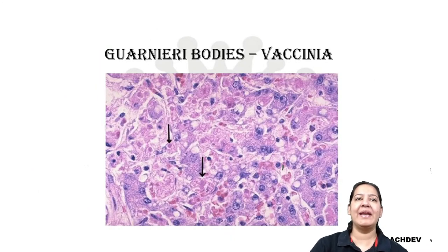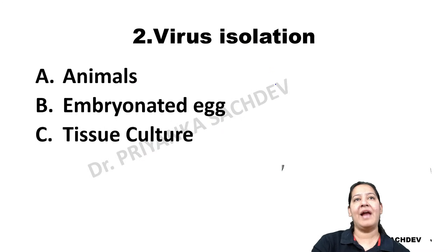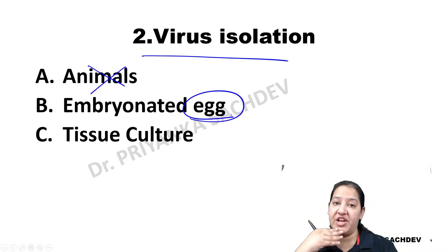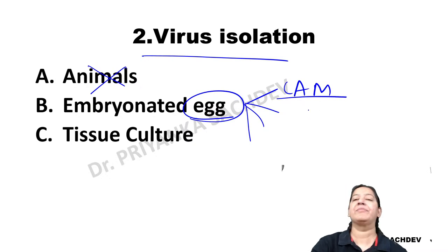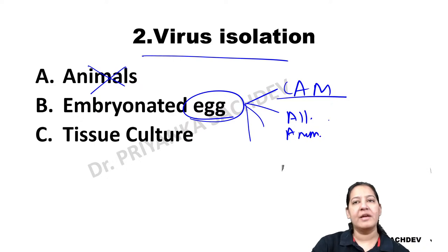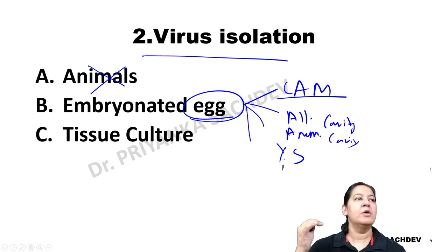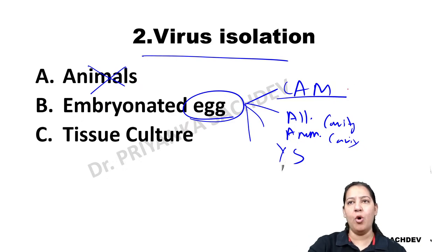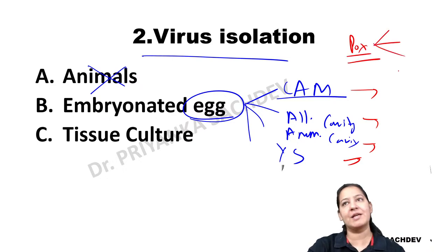For lab diagnosis of pox viruses, the specimen is vesicular fluid aspirated from the rash. A slide is made, stained, and examined for inclusion bodies: Paschen bodies indicate variola, Guarnieri bodies indicate vaccinia, Henderson-Peterson bodies indicate molluscum contagiosum, and Bollinger bodies indicate fowlpox. For virus isolation, pox viruses are grown on the CAM — the chorioallantoic membrane — of embryonated eggs. There are four layers in the egg: CAM, allantoic cavity, amniotic cavity, and yolk sac.